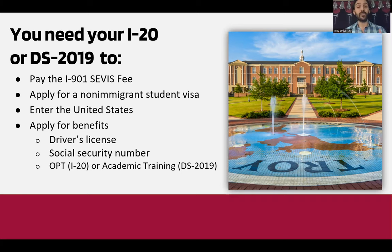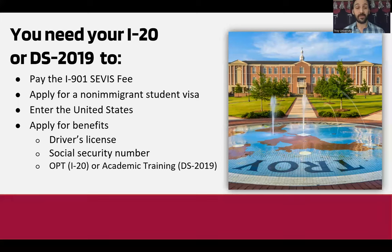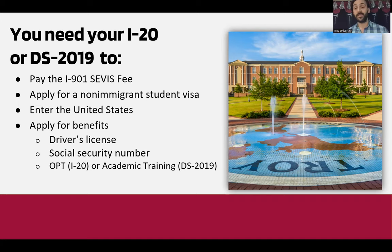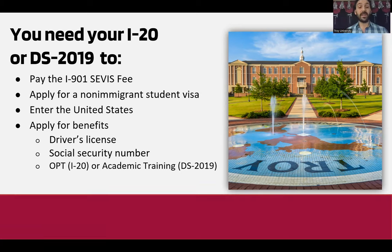Once you have your I-20 or DS-2019, you can pay the I-901 fee and apply for a non-immigrant visa. When you arrive at a U.S. port of entry, the officer will ask for your I-20, so make sure you have a printed copy when traveling. Once in the U.S., you can apply for a driver's license, work on campus with a Social Security number, and upon graduation apply for OPT or academic training.